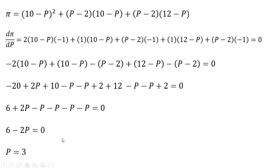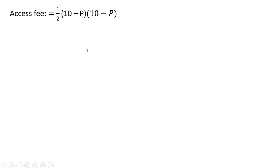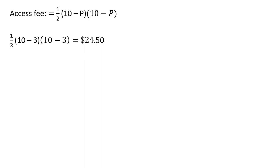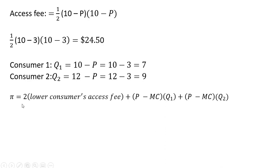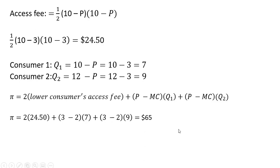After simplifying, we get P equals 3. Plugging $3 into the access fee formula, the access fee is $24.50. So if each consumer must pay the same access fee, the firm charges everyone $24.50. Consumer 1 will buy 7 units and consumer 2 will buy 9 units when the price is $3. The firm's total profit is 2 times $24.50 plus (3 minus 2) times 7 plus (3 minus 2) times 9, giving a total profit of $65.